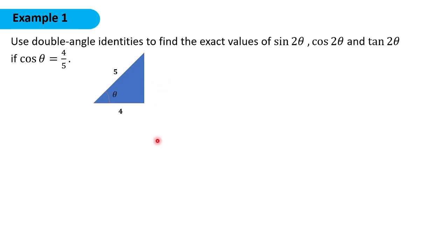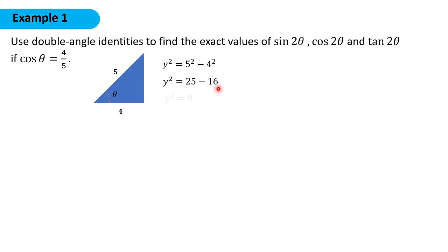By the Pythagorean theorem, we can say that y² is equal to 5² minus 4². 5² is 25 minus 4² is 16. 25 minus 16 is 9, and getting the square root gives us 3. So the opposite side is 3.